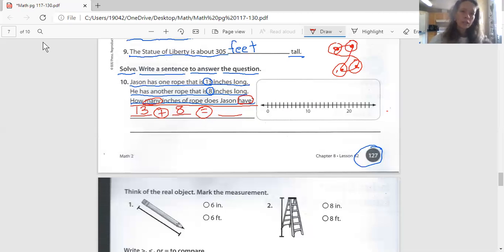So here's how I counted. I go 13, 14, 15, 16, 17, 18, 19, 20, 21. My answer is 21, and now let's do a little writing for this. It says, Jason has one rope that is 13 inches long. He has another rope that is 8 inches long. How many inches of rope does he have? Well, we found the answer to be 21. So we're going to write a sentence that says, Jason has 21. What? Feet or inches? We said inches. Can't write hot dogs. He doesn't have 21 hot dogs. Inches of rope.